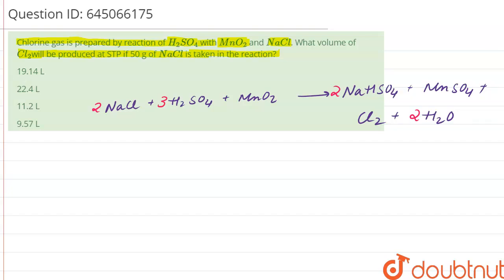Let us start this question. First of all, we know that molar mass of NaCl is 35.5 plus 23, which is equal to 58.5 gram.